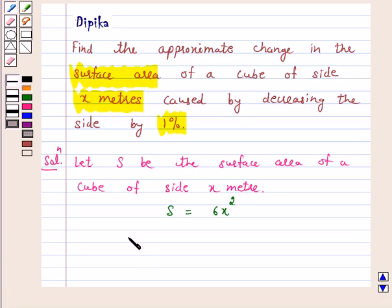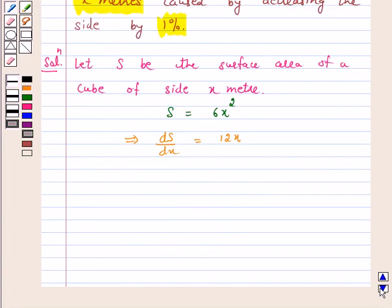This implies ds by dx is equal to 12x. Now, percentage decrease in side is